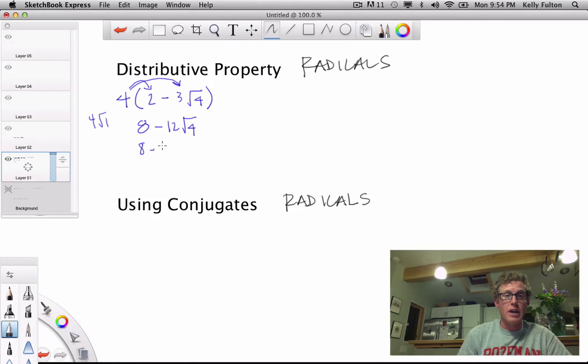Well, that's 2. So it ends up being 8 minus 12 times 2, or 8 minus 24, which equals negative 16. That's one set of radicals using the distributive property.